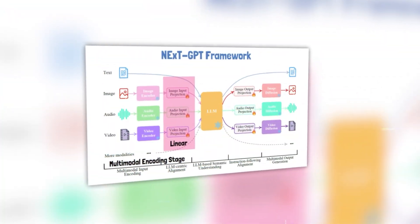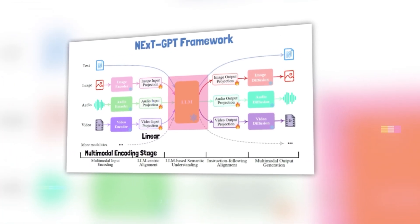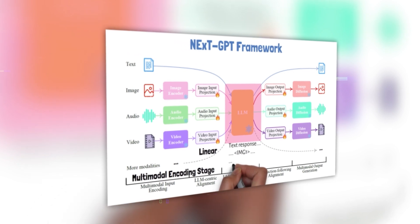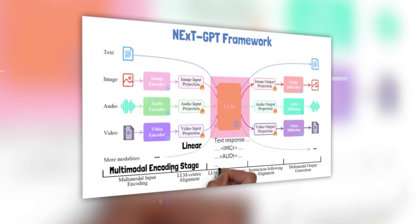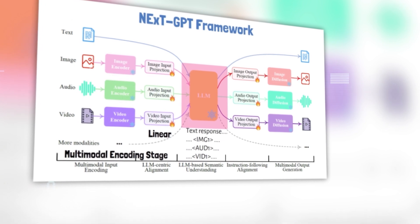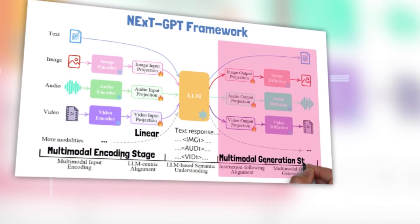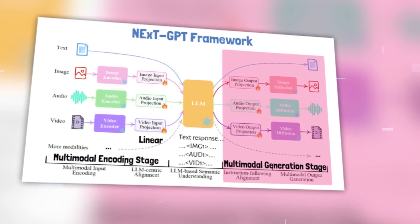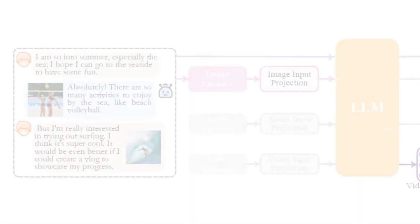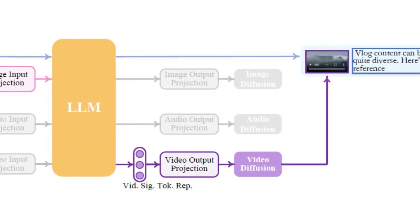Multimodal adapters are modules that change different types of inputs into language-like forms that LLMs can understand, and also turn LLM outputs into other formats using diffusion models. LLMs are the core agents of NextGPT — they use these language-like forms from different sources to understand and think about the inputs, then give back text answers or special signals that tell the decoding parts whether to create multimodal content. By connecting LLMs with multimodal adapters and diffusion decoders, NextGPT achieves universal multimodal understanding and any-to-any modality input and output.